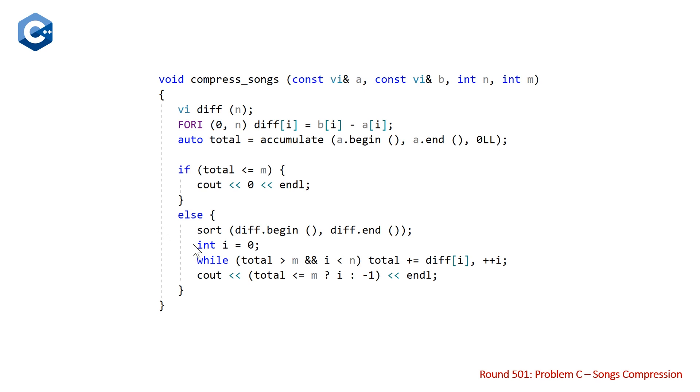For our other cases, what we're going to do is sort our differences. Then we're going to initialize a variable i, which is just going to be our index of the current song we're looking at. And we're going to loop through in a while loop, while our total is greater than our target value m and we still have elements to look at. We are going to do a plus equals of total of our current negative difference. So we're basically subtracting that difference from total, and then pre-incrementing i.